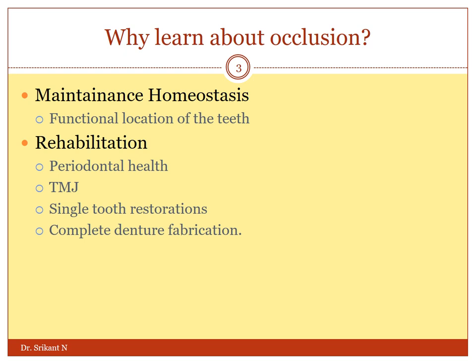Proper occlusion leads to maintenance of homeostasis in the function of the teeth, oral cavity, as well as the temporomandibular joint. It is an essential feature for maintenance of periodontal health as well as temporomandibular joint health. We should remain cognizant about occlusion whenever we are doing restorations, be it a single tooth restoration or a complete denture fabrication. Both of them should have proper occlusion which will maintain homeostasis and periodontal as well as joint health.